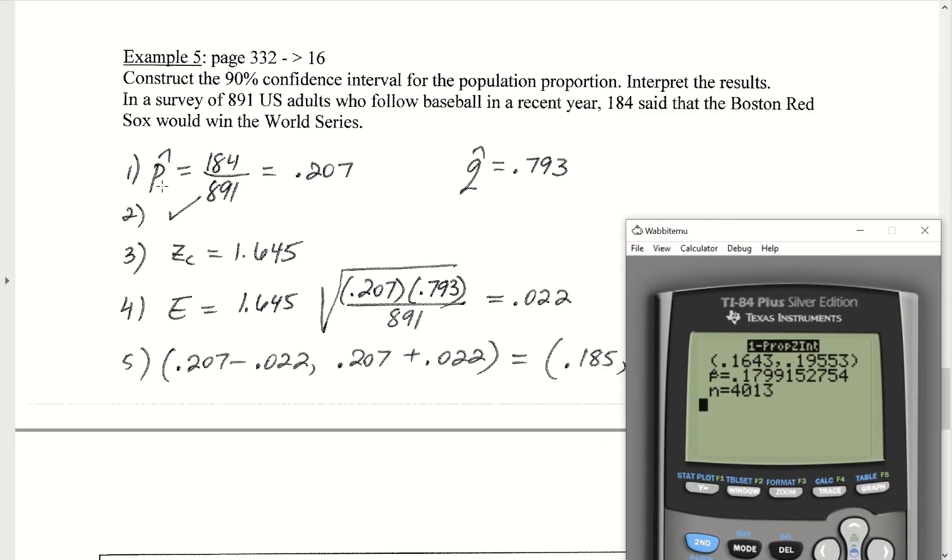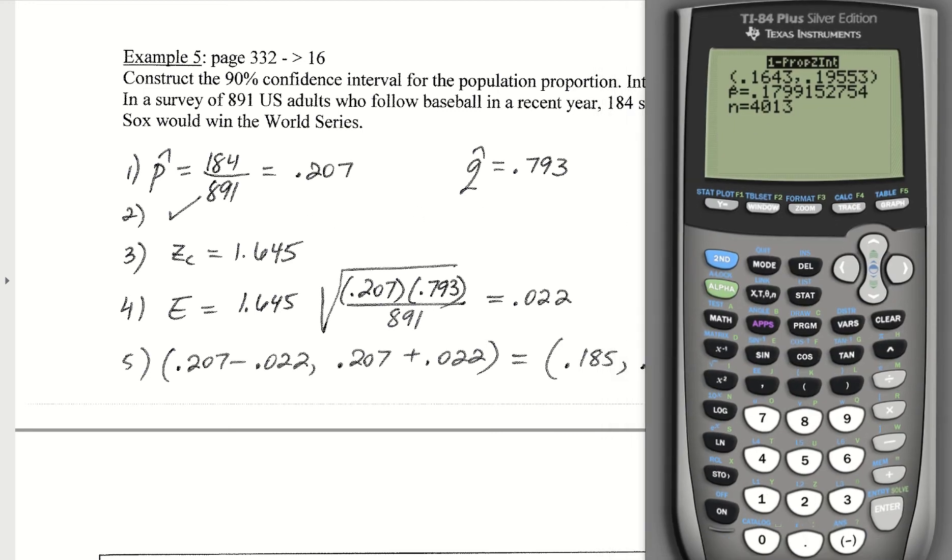So we have the point estimate p-hat would be the number that do believe that they'll win the World Series. That's 184 divided by the size of our sample. That's 891, which gives us 0.207. Q-hat is going to be 1 minus p-hat, which is 0.793. We should check, and it will still be the case, that if you take p-hat times n, 0.207 times 891, and also 0.793 times 891, both of those would be bigger than or equal to 5. So we can go ahead and construct our interval.